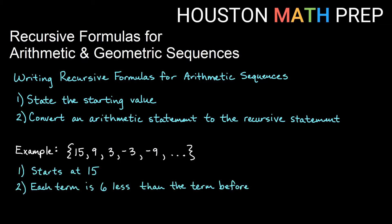Each term is going to be 6 less than the term before. So this starts at 15, which tells me a1 is going to be 15. The second statement, each term, we want to read that as a sub n. So a sub n equals 6 less than the term before. Remember the term before we'll call a sub n minus 1. So we'll get a sub n equals a sub n minus 1 minus 6. And again, that will start at term number 2.